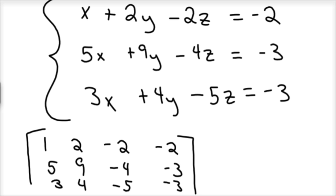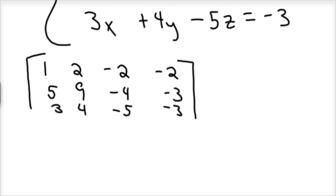We're going to put that matrix in reduced echelon form in order to find our answer. If you remember, that's a 1 starting in the upper left and going diagonally to the lower right. We're already okay with the first row, so we don't have to do anything yet. But we need a zero here and a zero here.